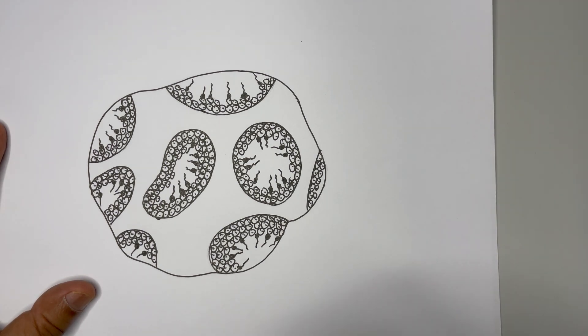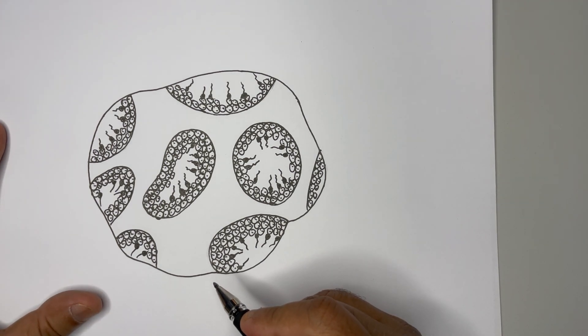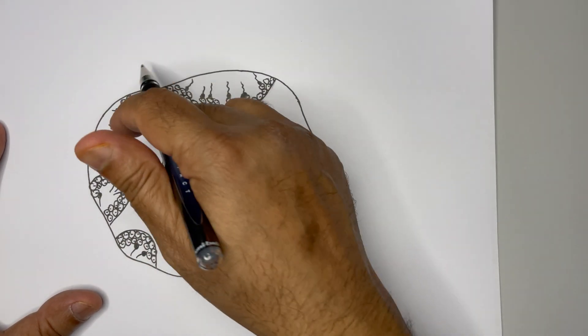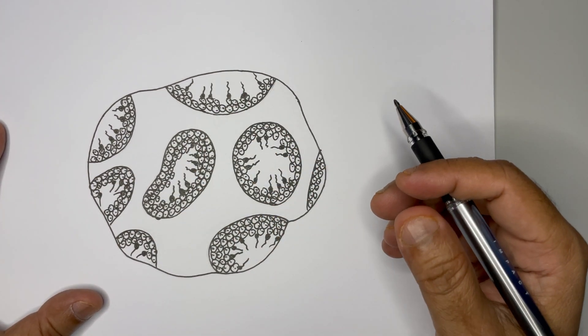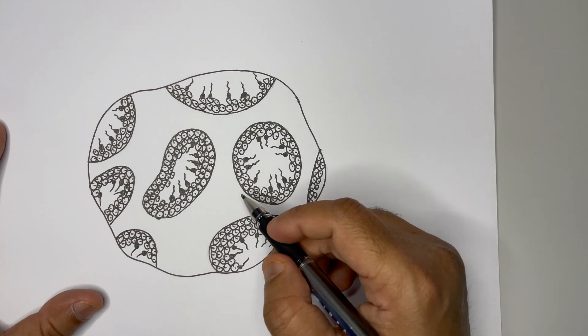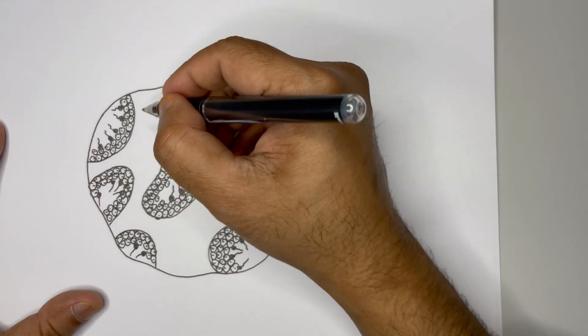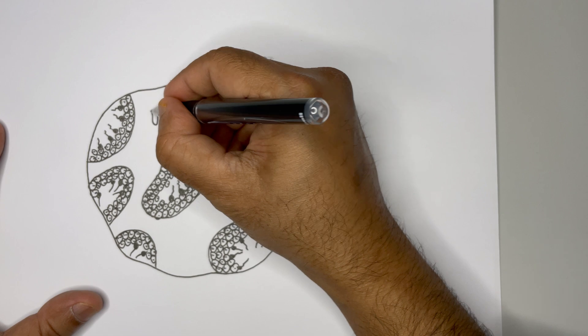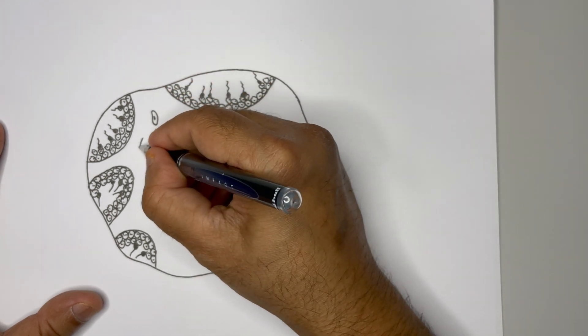All the spermatozoa and all these seminiferous tubules which we are seeing in this diagram are covered. It's time to show the cells between the seminiferous tubule, and that's called the interstitial cells or Leydig cells. Let us draw the Leydig cells. So for that draw elongated cells like this and put a dot in the middle to show there is a nucleus in it.